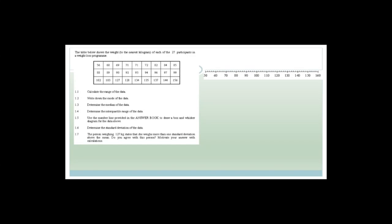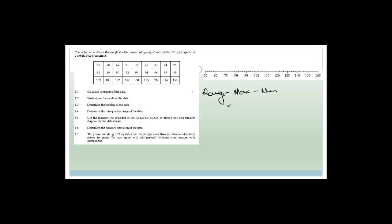Now let's look at this data. The table below shows the weight to the nearest kilogram of each of the 27 participants in a weight loss program. Very nicely, they've organized it in numerical order for us, starting at 56 and ending at 156. It says calculate the range of the data. The range is equal to the maximum minus the minimum, which is 156 minus 56, which equals 100 kilograms.